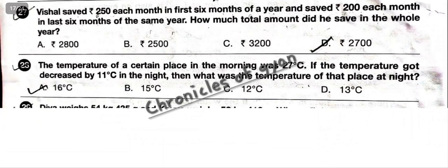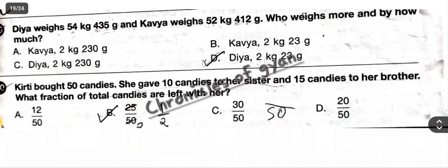Question 28: The temperature of a place in the morning was 27 degrees Celsius. It decreased by 11 degrees Celsius at night. Question 29: Who weighs more and by how much? Clearly Divya weighs more. Subtract the two weights to get the difference: 2 kg 23 g. Divya weighs more. The answer is option D.